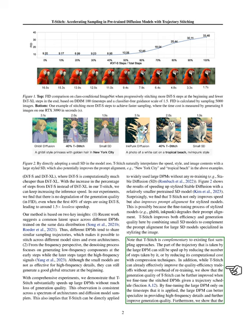This fine-tuning allows the larger DPM to specialize in providing high-frequency details, thus improving the overall quality of the generated data. In summary, our main contributions are the development of T-Stitch, a straightforward yet highly effective method for improving the inference speed of DPMs by using smaller models for early denoising steps and larger models for later steps. This approach achieves better speed and quality trade-offs than using large DPMs alone, and our experiments confirm that T-Stitch is broadly applicable across different model architectures and samplers, enhancing the performance of widely used models like stable diffusion, particularly in terms of prompt alignment for stylized text-to-image generation.